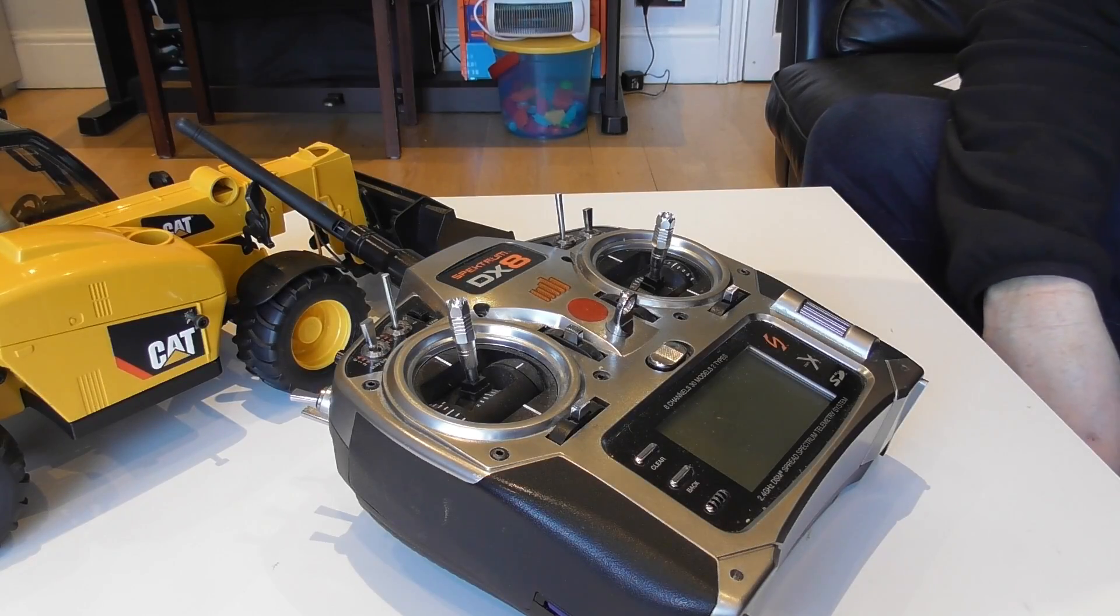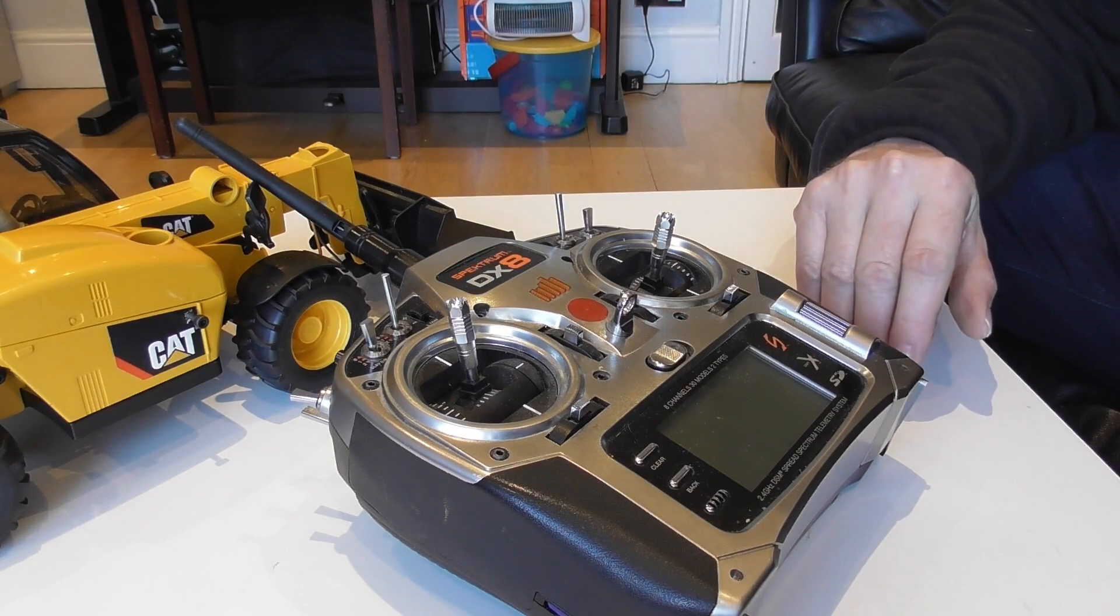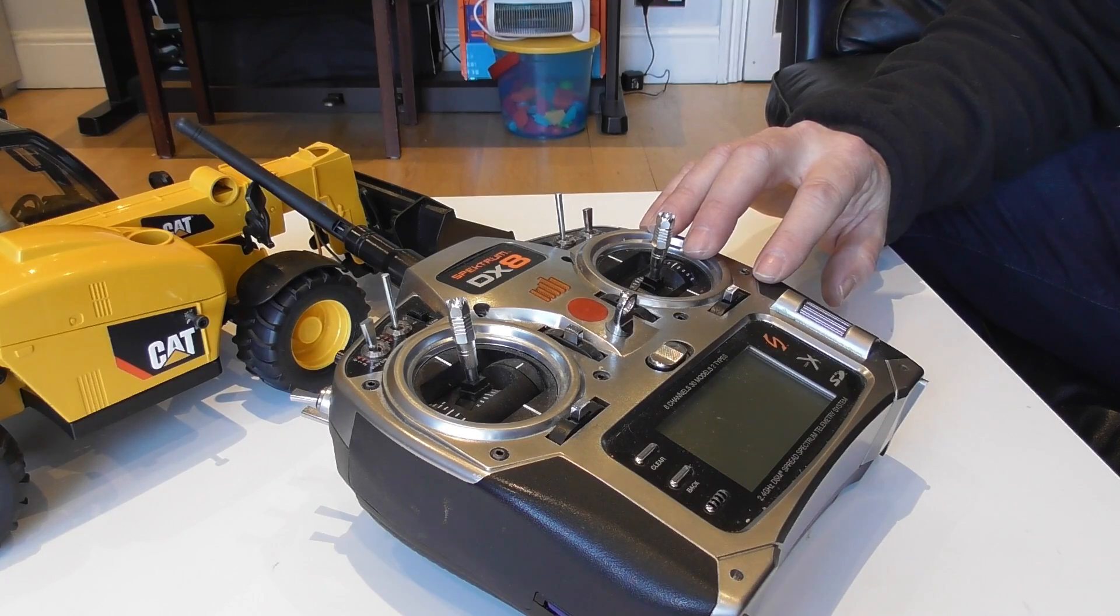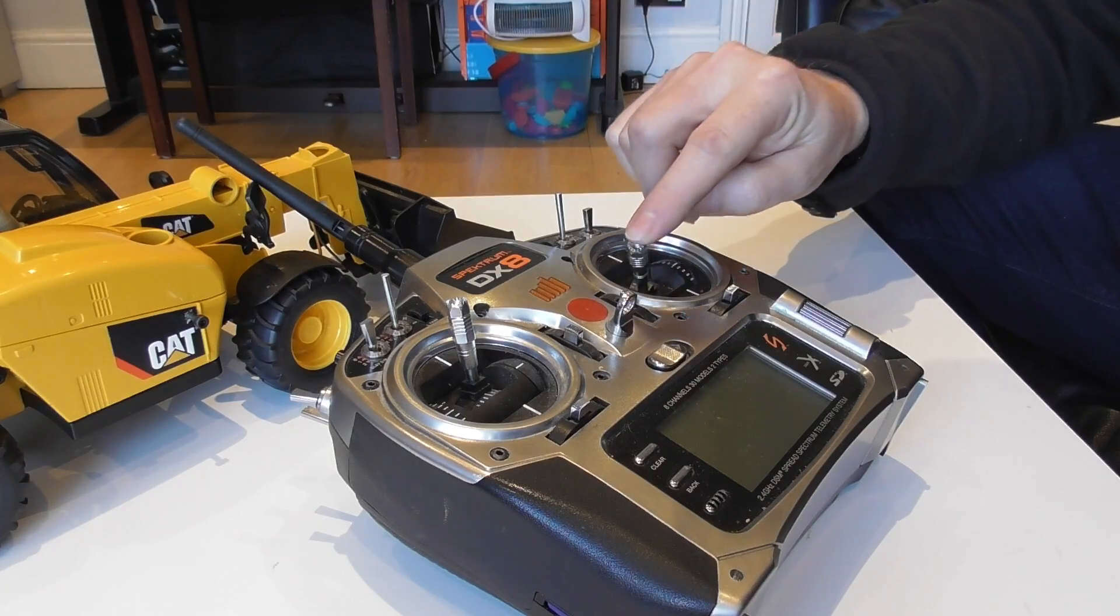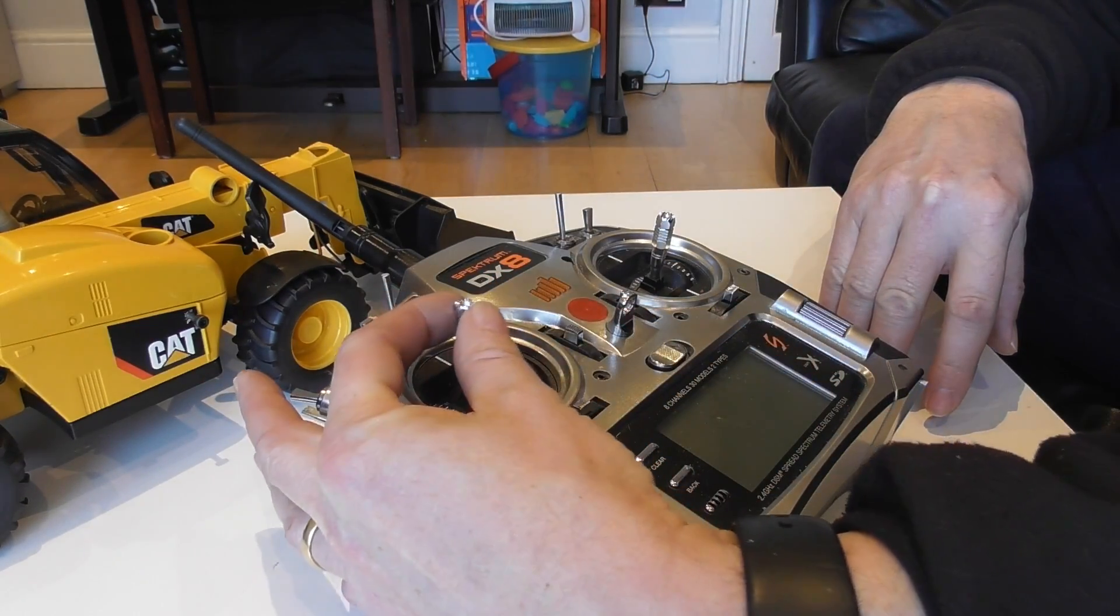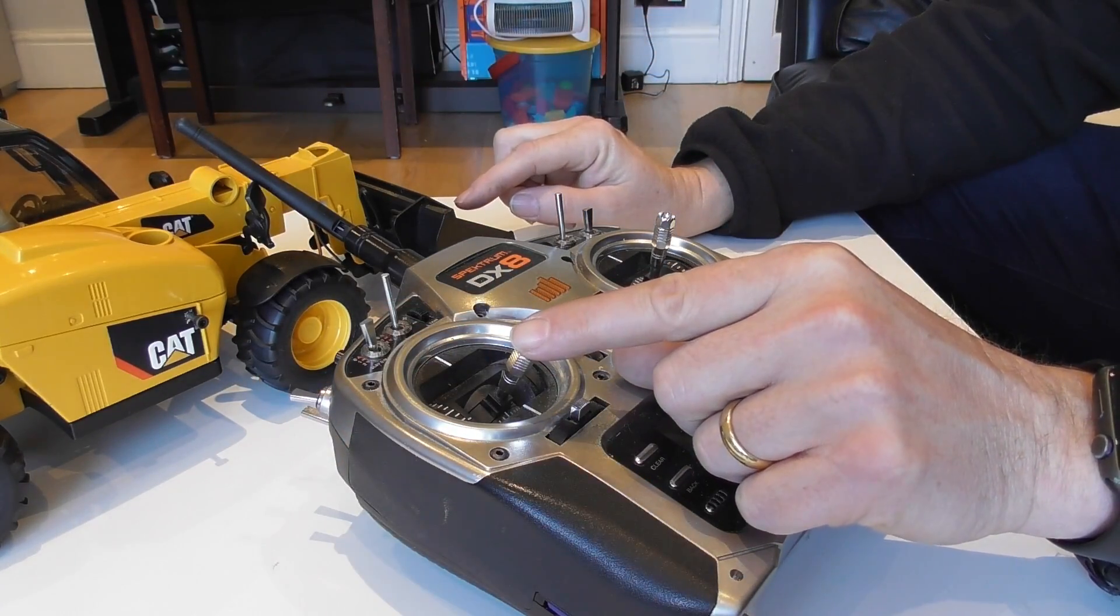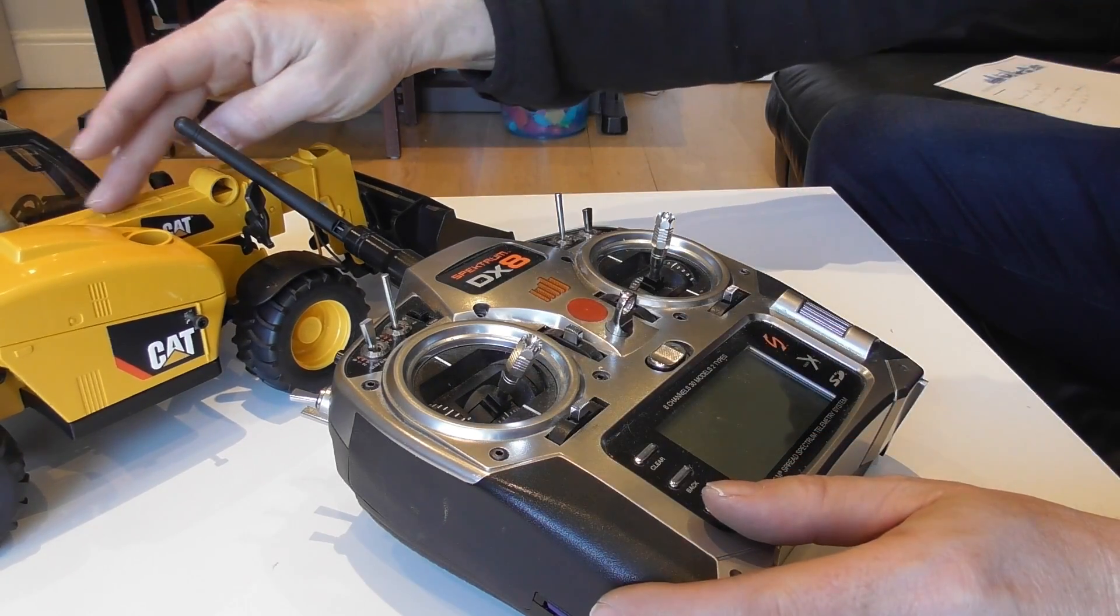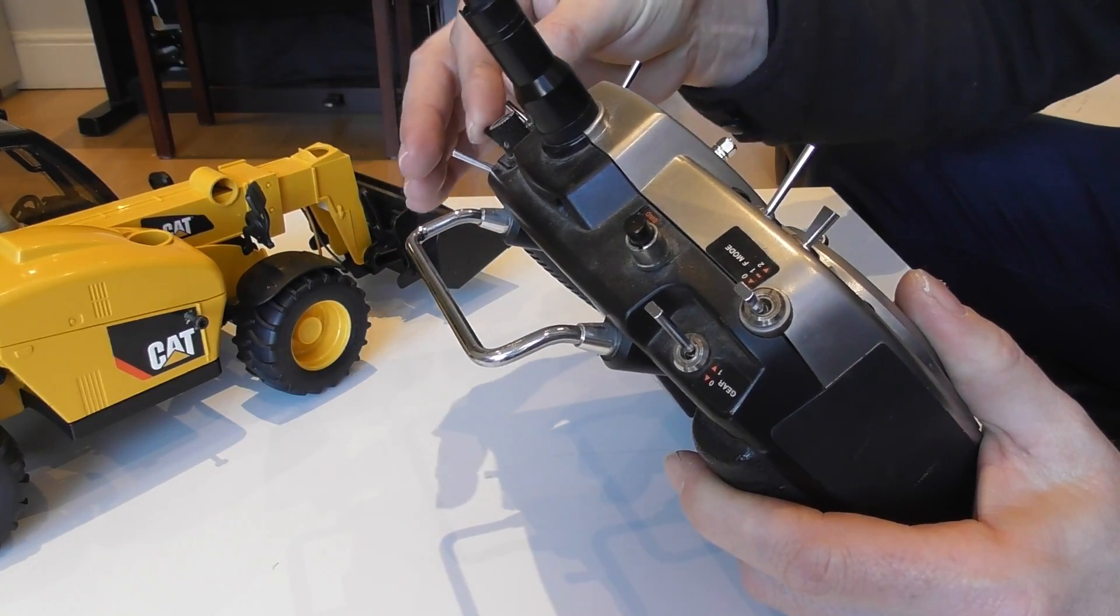So in terms of the operation, I'm using an older type Spectrum DX8 transmitter and this has got the functions on it that I need. Basically the controls are forwards, backwards, and steering on the right stick here. On the stick on the left here we've got the arm being raised up and down, and then we've got the tipping of the bucket. In order to extend this arm, hopefully you can see it, I'm just using this knob here.